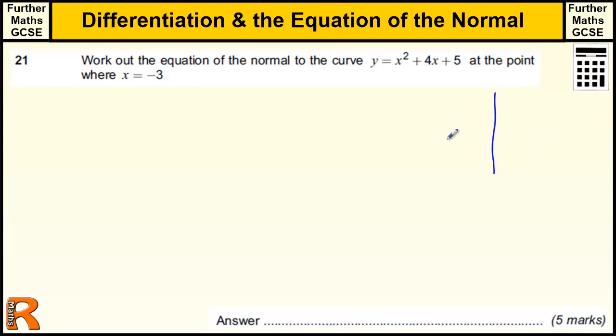Now, what is a normal? If we have a quadratic graph and x equals minus 3, we've got an equation of a straight line that touches that value.